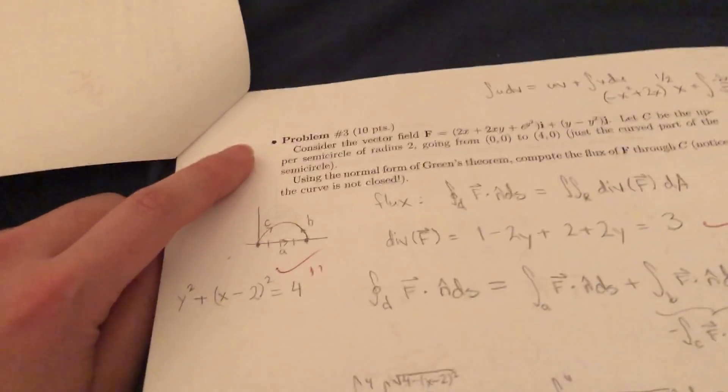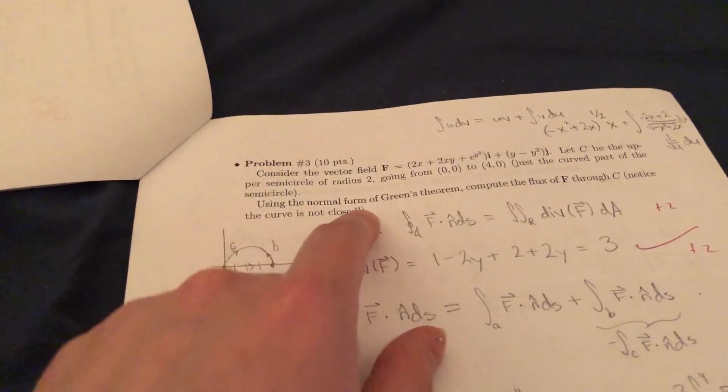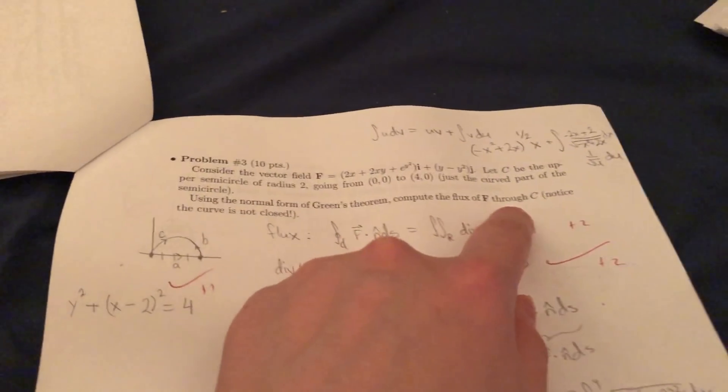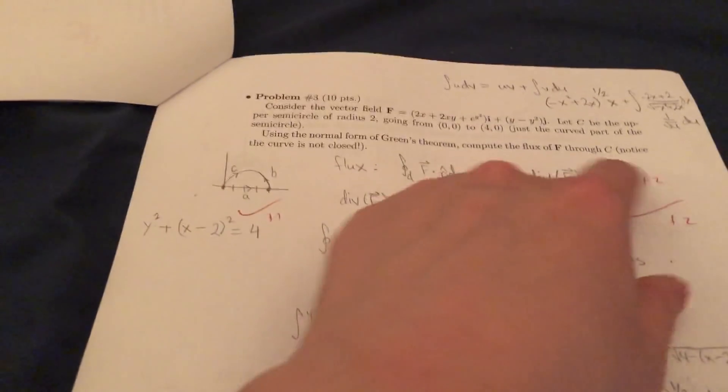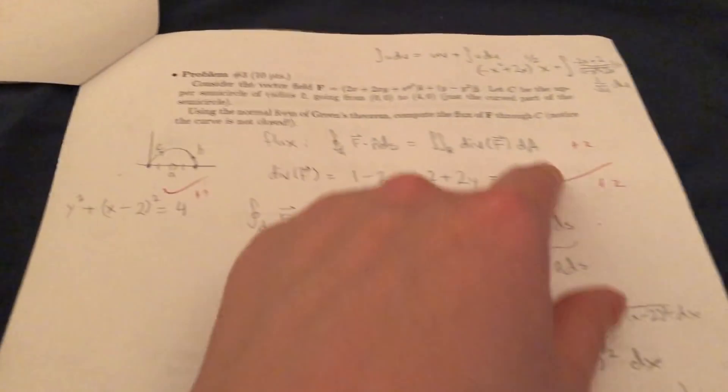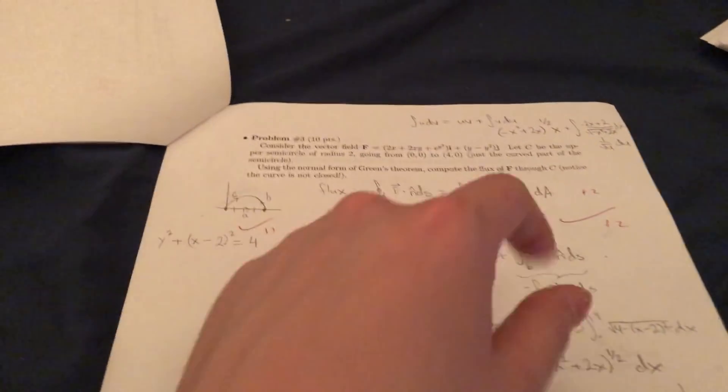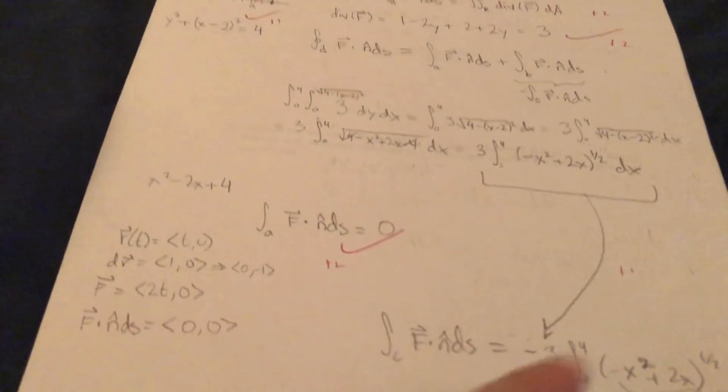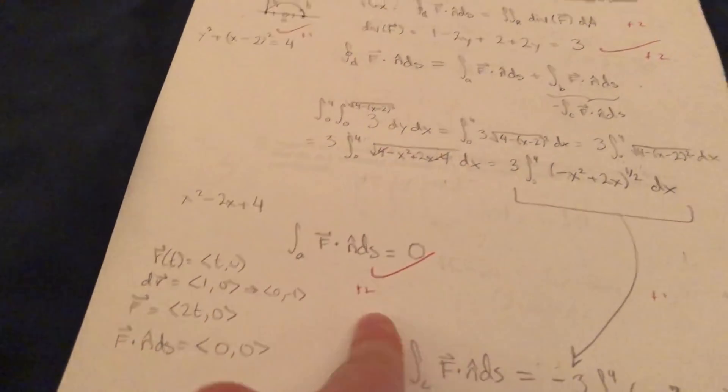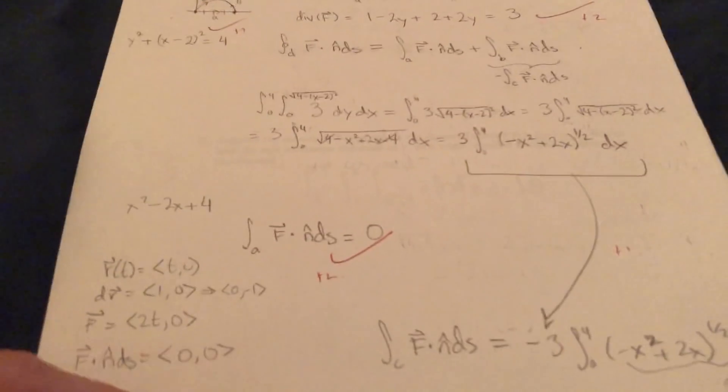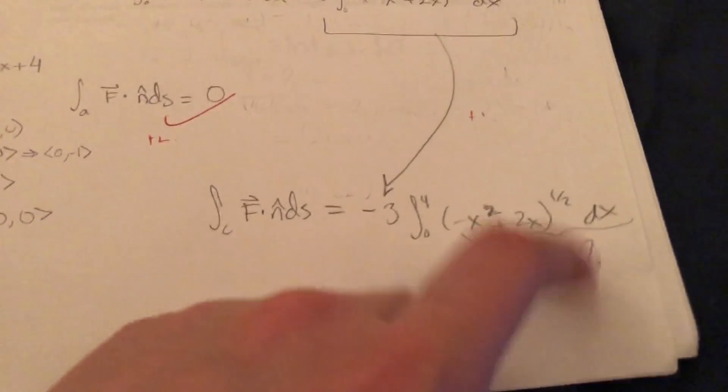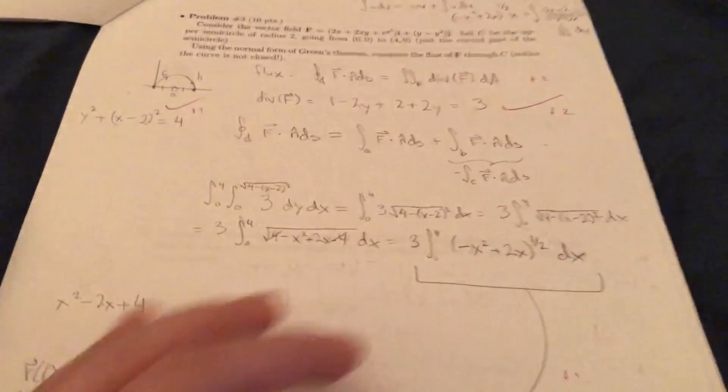Okay, next problem. More vector fields. Hooray! Using the normal form of Green's theorem, compute the flux of f through c. Notice the curve is not closed. So more pluses according to partial credit. That's good. Always get partial credit and partial credit here. But I couldn't figure out what it was at the end. So I couldn't get the answer, but all the partial credit adds up. It really does, especially if you're drawing the pictures.